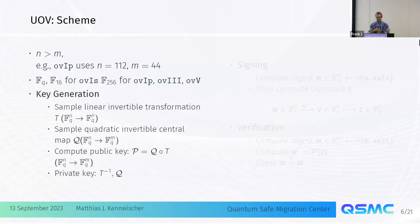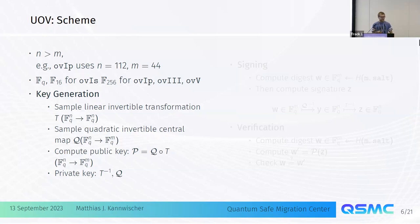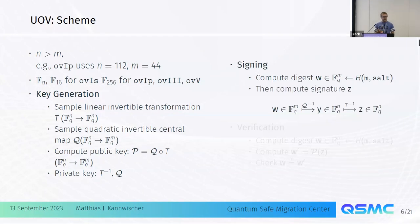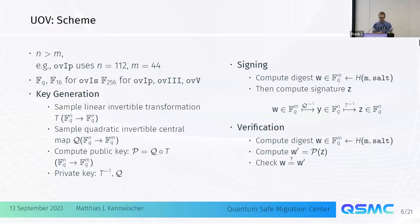For key generation, we sample two transformations: one is a linear invertible transformation T mapping from N elements to N elements, and the other is a quadratic invertible central map Q mapping from N elements to M elements. The public key is the composition of these two maps, making it hard to invert. The private key consists of the two individual maps. To sign a message, we hash the message to a vector of M field elements, then invert Q and T to get a pre-image. Verification applies the public map to the signature and checks it equals the message hash.